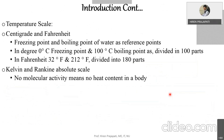Kelvin and Rankine are absolute scales defined by backtracking to find the intercept, related to concepts like the triple point. These are fundamentals covered in thermodynamics. Kelvin and Rankine are the absolute scales with reference to which we define the temperature of other bodies.